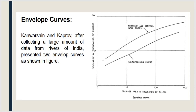Next are envelope curves. The envelope curves for India were determined by Kanwar Sen and Kharpo, who collected information from North and Central Indian rivers and Southern Indian rivers. The drainage area is marked on the graph, and corresponding discharge values can be calculated by drawing a straight line. Southern Indian rivers use one envelope curve, and Northern and Central Indian rivers use another.